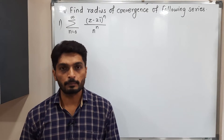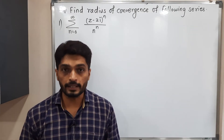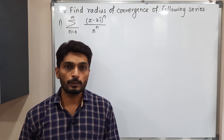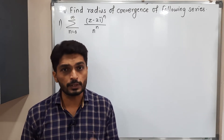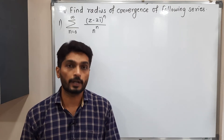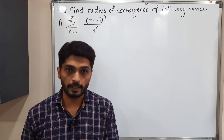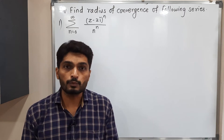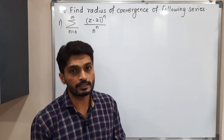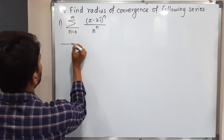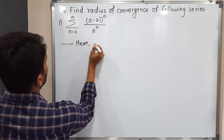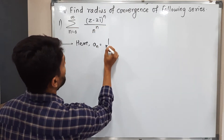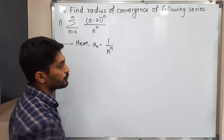Let us discuss this example. We have to find the radius of convergence of a given complex series. In a previous video we already covered what radius of convergence is and how to find it. There are two methods: the ratio test and the root test. For both tests we need a_n first. Here a_n is equal to 1 upon n raised to n.